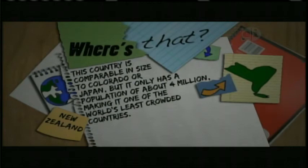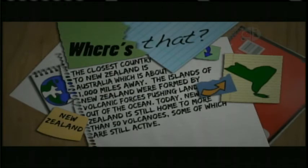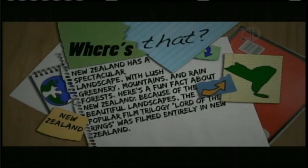This country is comparable in size to Colorado or Japan but it only has a population of about 4 million, making it one of the world's least crowded countries. Although this country gained its independence from Great Britain in 1907, Queen Elizabeth II is still the official head of state. New Zealand is actually a group of islands in the southeastern Pacific Ocean. The closest country to New Zealand is Australia, which is about a thousand miles away. The islands of New Zealand were formed by volcanic forces pushing land out of the ocean. Today New Zealand is still home to more than 50 volcanoes, some of which are still active. New Zealand has a spectacular landscape with lush greenery, mountains, and rainforests. Here's a fun fact: because of the beautiful landscapes, the popular film trilogy The Lord of the Rings was filmed entirely in New Zealand.